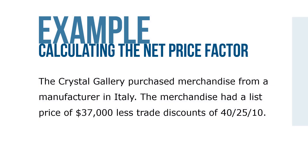Here's an example. The Crystal Gallery purchased merchandise from a manufacturer in Italy. The merchandise had a list price of $37,000, less trade discounts of 40, 25, and 10. Calculate the net price factor and the net price of the order.